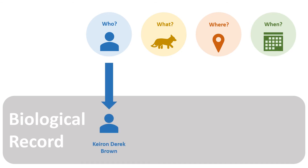The who refers to the person making the record, known as a recorder. This should ideally be recorded as a person's name. The what refers to the organism that is being recorded. Often this is a species name, but other taxonomic values such as family or subspecies are also valid.